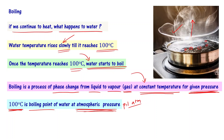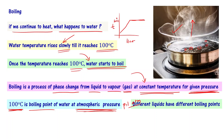Once the temperature reaches the boiling point, even if you keep supplying heat, the temperature is not going to change — it is going to stay at the boiling point. Different liquids have different boiling points. Please note this.